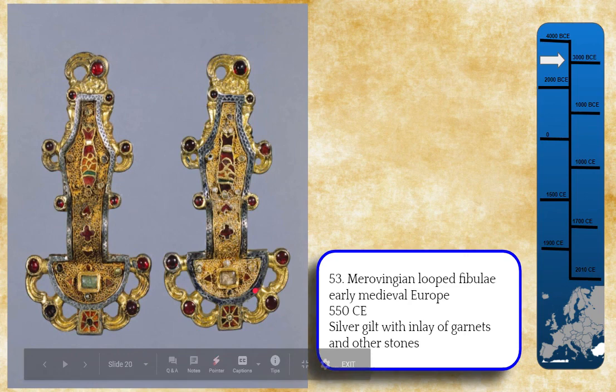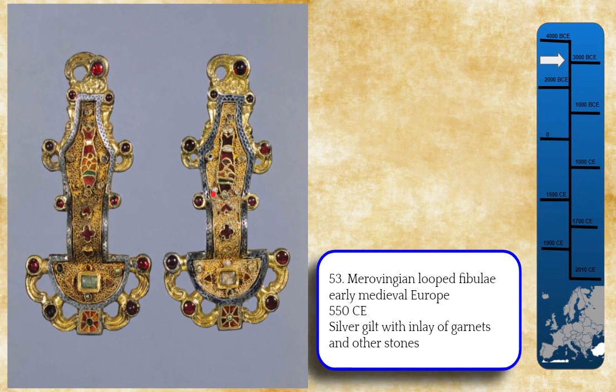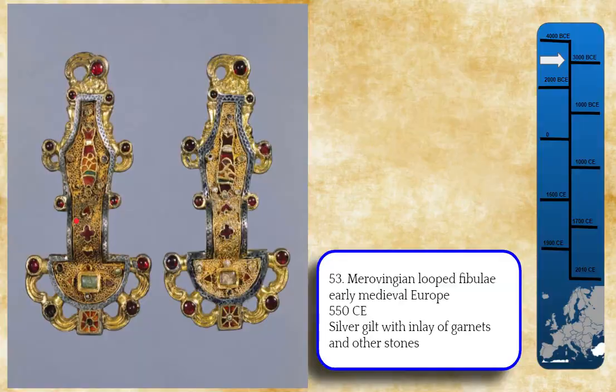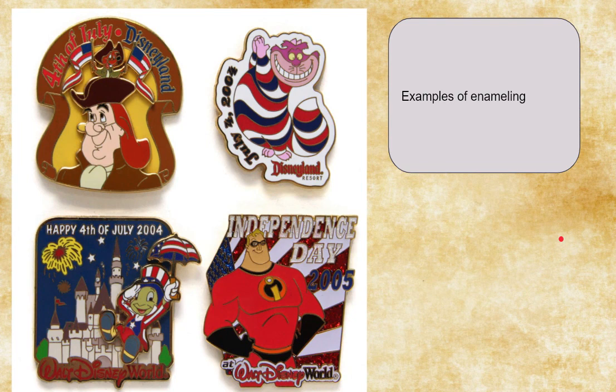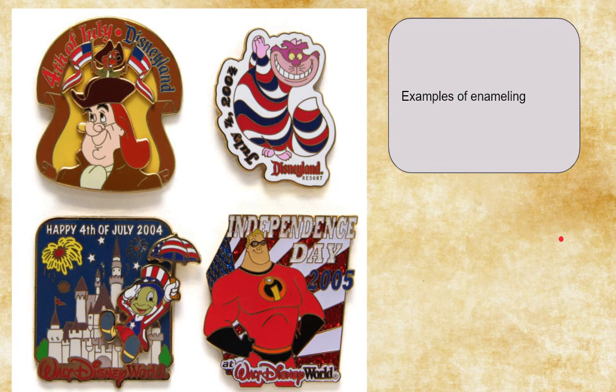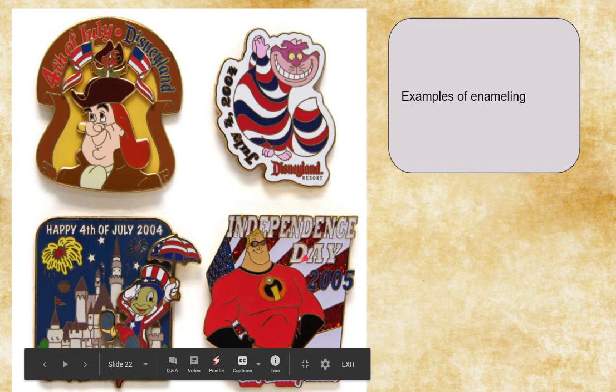It's so richly decorated — enamel, chasing, cloisonné, patterning throughout the metal. It is a fibula, a brooch that would hold up someone's robe, and it would have been a kingly gift because it's so richly decorated. It is not flat as it appears from the front — it bends to accommodate a pin. We still do enameling today — if you collect enamel pins or Disney pins, that's the same technique, though today they use plastics instead of glass.